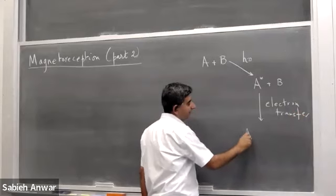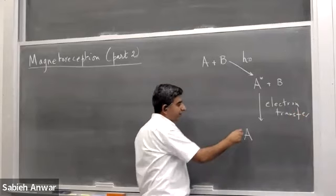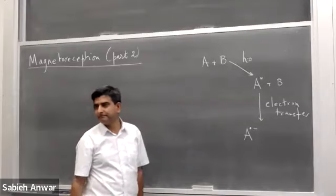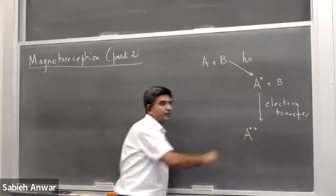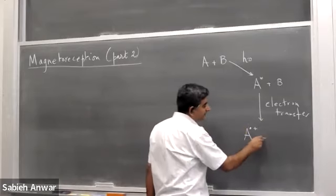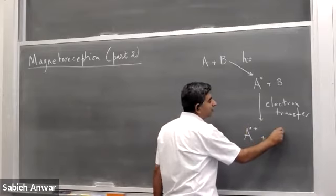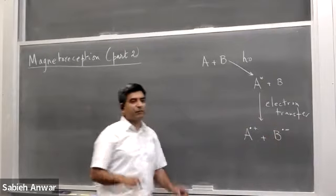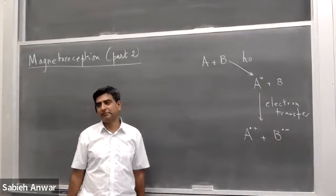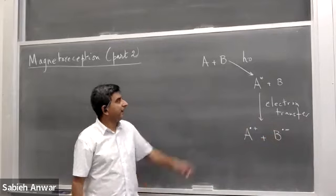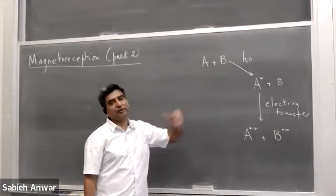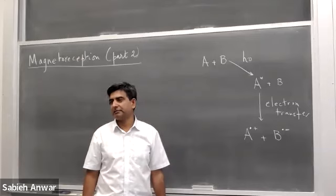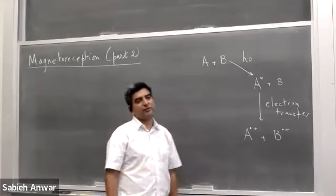Molecule A acquires a positive sign because it has lost an electron, and at the same time molecule B gets an unpaired electron and acquires a negative sign. So now we have two unpaired electrons, each carrying a spin. Since the original pair of molecules had a singlet state, these two electrons will also start off in a singlet state.